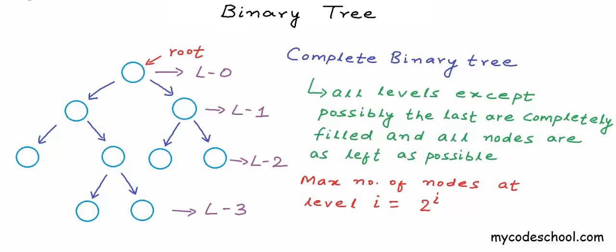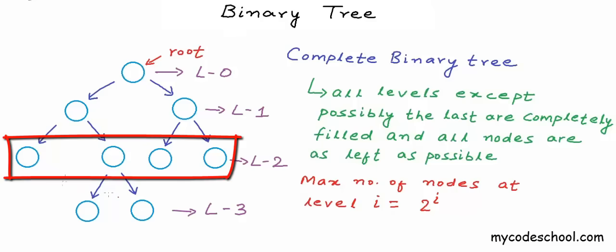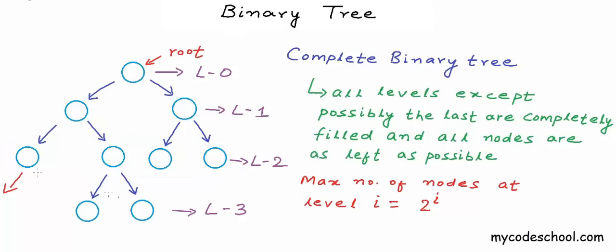This is clear because each node can have 2 children. So if we have x nodes at a level, each can have 2 children, giving at most 2x nodes at the next level. In this binary tree we have 4 nodes at level 2, which is the maximum for that level. Each of those nodes can possibly have 2 children, so at level 3 we can have at most 2 times 4, which is 8 nodes.